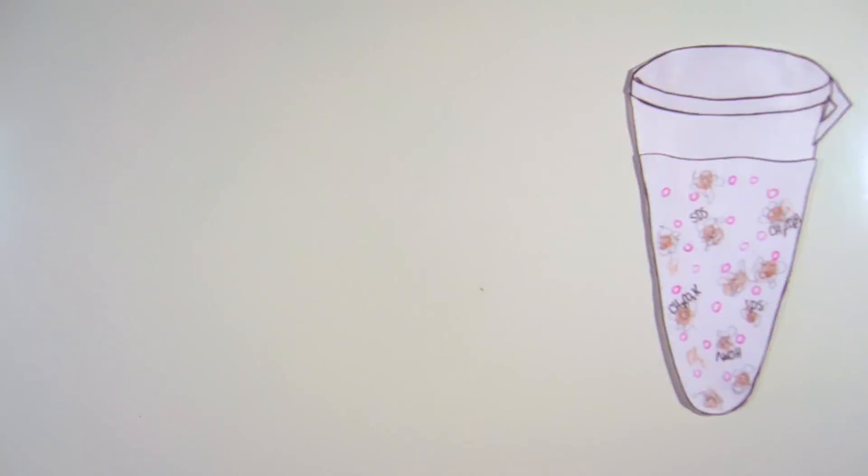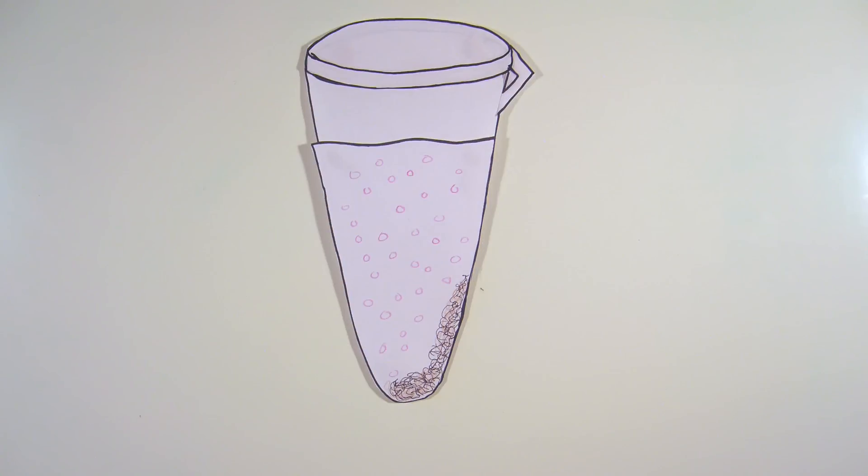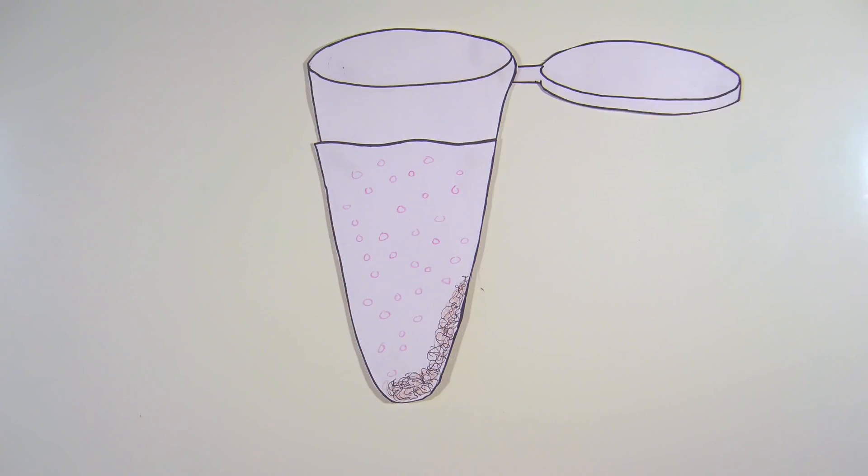The tube is centrifuged to separate the solid precipitate, which will be discarded, from the liquid supernatant.